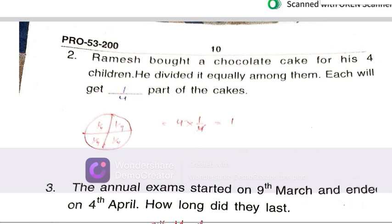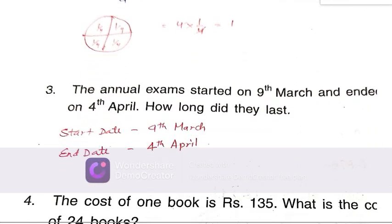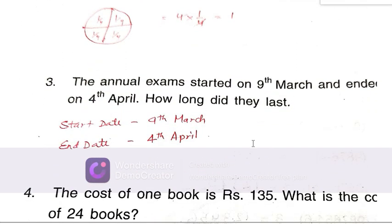The annual exam started on 9th March and ended on 4th April. How long did they last? You will see that March is 23 days from 9th to 31st, and ending date is 4th April. Since March is 31 days and in April 4 days, total is 27 days.